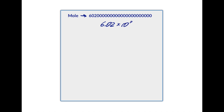We need to use such a large number for counting atoms, molecules, and formula units of ionic compounds because they are very, very, very small. So to have a visible amount of matter, we have to have a very, very, very large number of particles in one place. There are three types of representative particles that we will be mentioning.